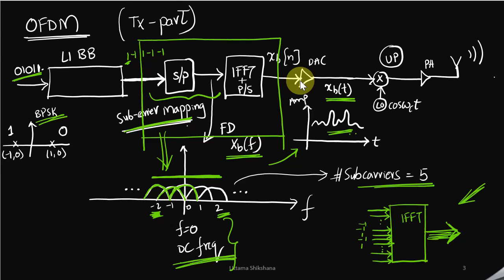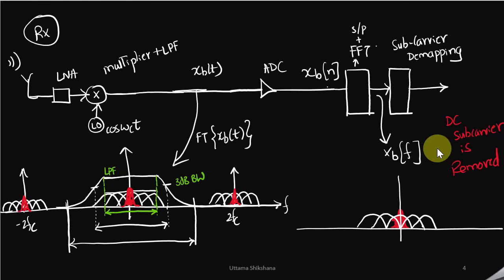Now we understand in OFDM how we map the samples to the subcarriers and how the spectrum is represented as xb(f) in the frequency domain and xb(t) in the time domain. Then we do upconversion and transmit. In the receiver part we do the down conversion.